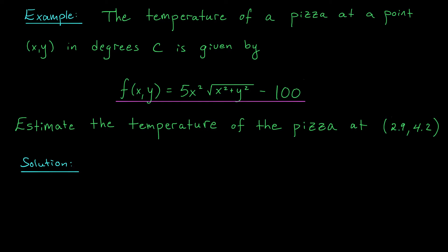All right folks, let's try an example. In this question, we're trying to estimate the temperature of a pizza. At a point X, Y, the temperature in degrees Celsius is exactly equal to the function F(X, Y) — it's 5X squared times the square root of X squared plus Y squared minus 100. We'd like to estimate the temperature of this pizza at the point (2.9, 4.2). Now, as a bonus question, what toppings are on this pizza?